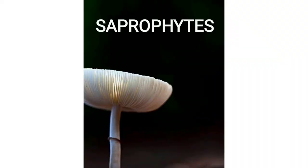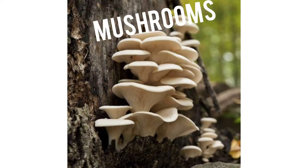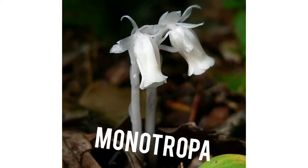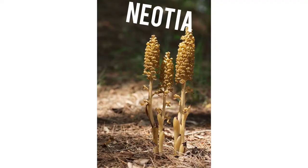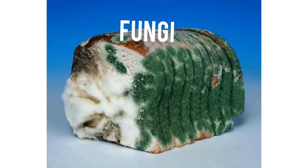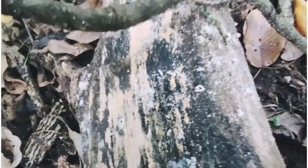Saprophytes absorb the food from dead and decayed matter. They have no chlorophyll to conduct photosynthesis. Mushrooms, monotropa, neotea and fungi are examples of saprophytes.